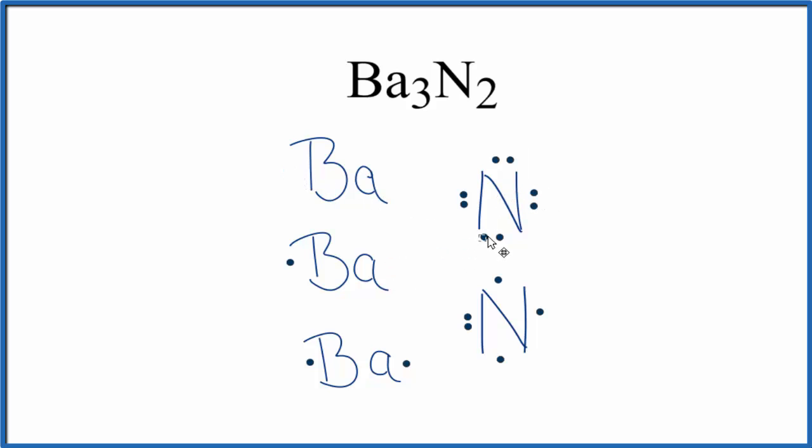So we move these electrons over here and now this nitrogen has an octet. It has eight valence electrons, very stable. Let's do it for this one down here. And you can see why we need three barium atoms for every two nitrogen atoms. This nitrogen, it has an octet.